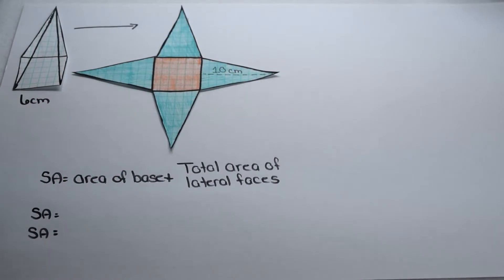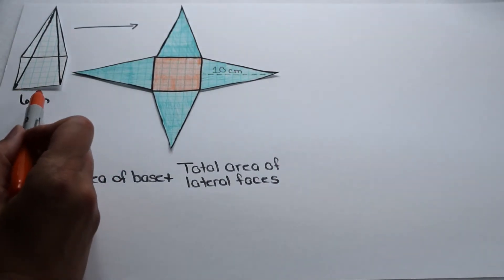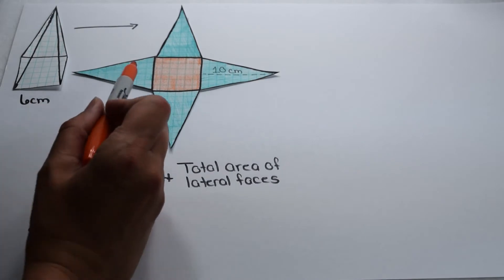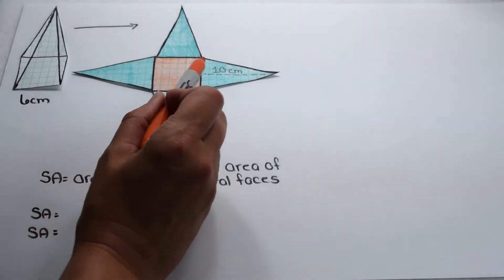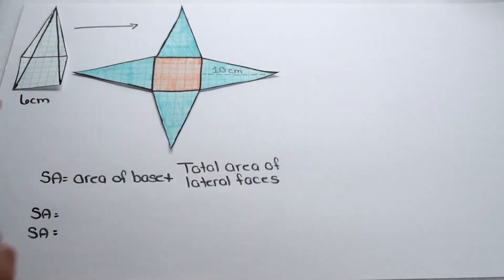The surface area of a three-dimensional figure is the total area of all the faces of the figure. Here we have a square pyramid. To more easily see each of the faces, we've flattened it into its net.